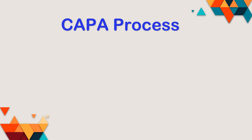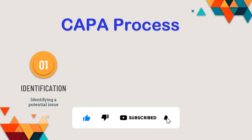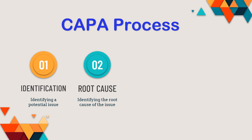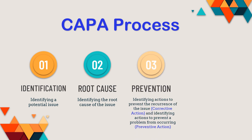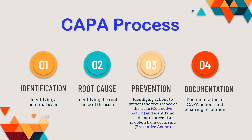Now let us understand the process followed in CAPA. The first step is identification — we identify a potential issue and what exactly it is. Then we do a deep dive into the root cause, identifying what caused the issue. Followed by prevention, where we identify how we can prevent the issue in the future and implement corrective as well as preventive actions. Finally, documentation — we document the issue in a sequential and detailed manner so that the CAPA action can be implemented and the issue is resolved.